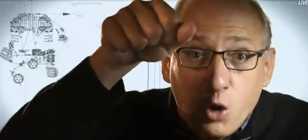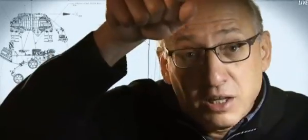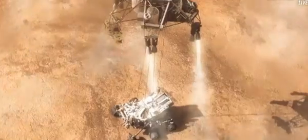As the rover touches down and is now on the ground, the descent stage is in a collision course with the rover and we must cut the bridle immediately and fly the descent stage to a safe distance from the rover.